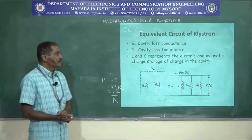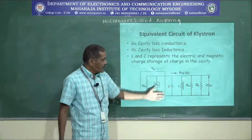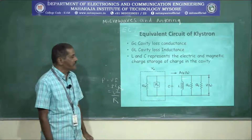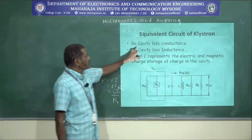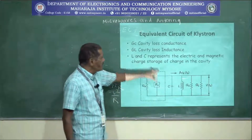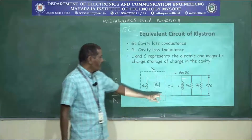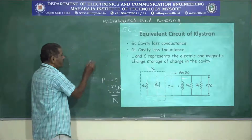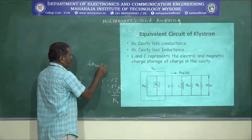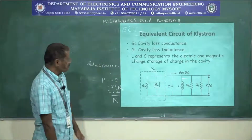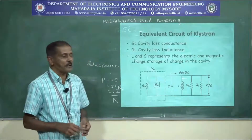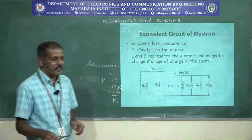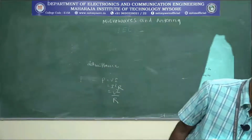This is the equivalent circuit of the reflex klystron oscillator. In this circuit, Gc is the cavity loss conductance, Gl is the load conductance, and C is the capacitance. G and B are the admittance components. The equivalent circuit is represented in terms of admittance and loss conductance.